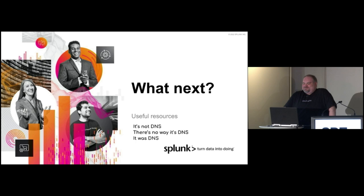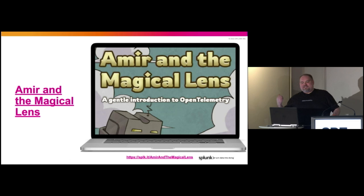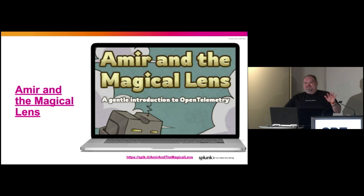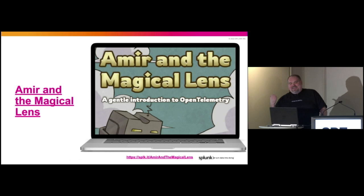There are a couple of things I'd like for you to check out. One of them is this children's book called Amir and the Magical Lens, which is a book about OpenTelemetry. It's a short book, about 15 pages, but we explain in really simple terms what is OpenTelemetry, why do you care, and how do you use it. There's an appendix that goes into some details. There's a link to it on the slides — you can also check out splk.it/AmirAndTheMagicalLens camel-cased.